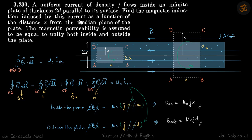Find the magnetic induction produced by this current as a function of distance x from the median plane. This is the median plane, this white plane, white line. We need to find the field at a distance x from it.